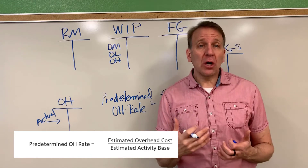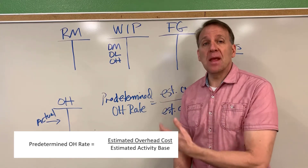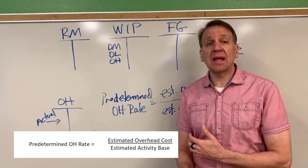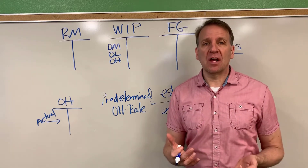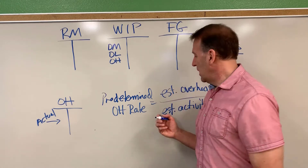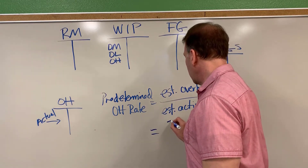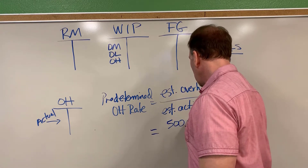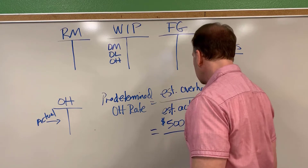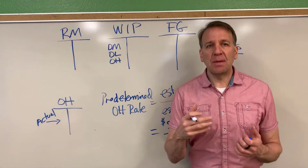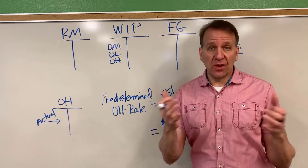If you're doing this for homework, these numbers need to be given to you, or there needs to be enough information so that you can calculate them. So let's assume for our example that the estimated overhead costs are $500,000 for this time period. These costs would be based off of information from the past — we're trying to estimate the costs for the coming year.